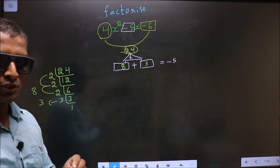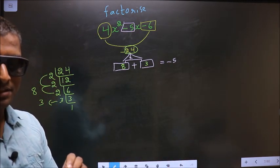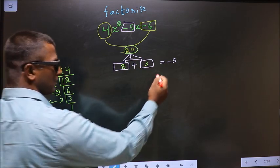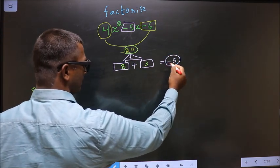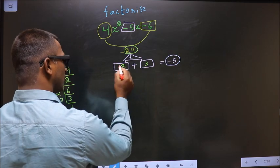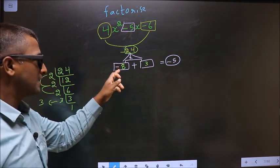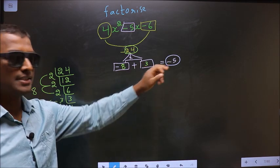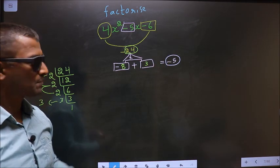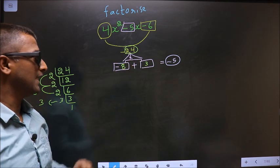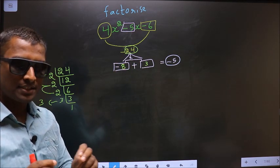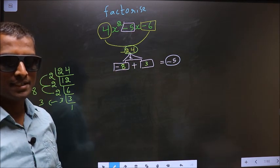Now, you should adjust the signs. Here, you should get minus 5. To get minus 5, you should put minus before 8. Minus 8 plus 3 results in minus 5. Minus 8 into 3 is minus 24. So now, the signs are also adjusted.